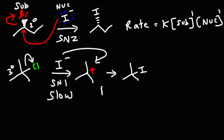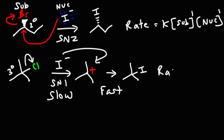The second step is the fast step. The nucleophile doesn't react in the slow step — it reacts in the fast step. The rate doesn't depend on the fast step; the rate of the overall reaction depends on the slow step. And because the nucleophile is not in the slow step, it's not going to be in the overall rate equation. So for an SN1 reaction, the rate depends only on the concentration of the substrate.